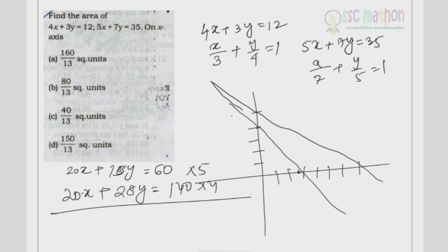Here we can see that 28y minus 15y equals 140 minus 60. So 13y = 80, then y = 80/13.